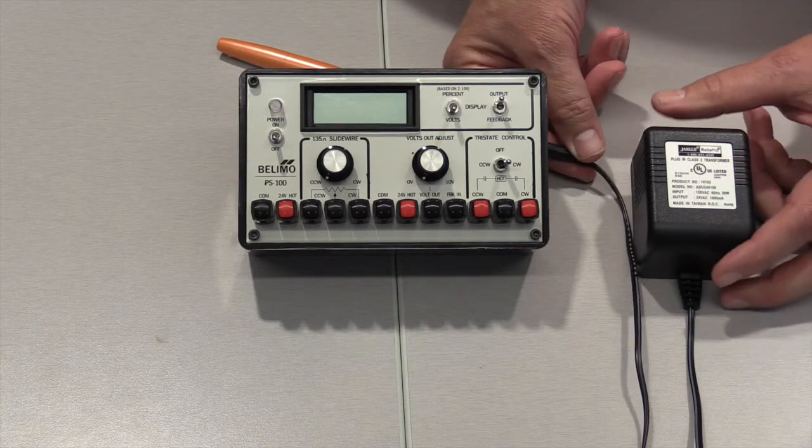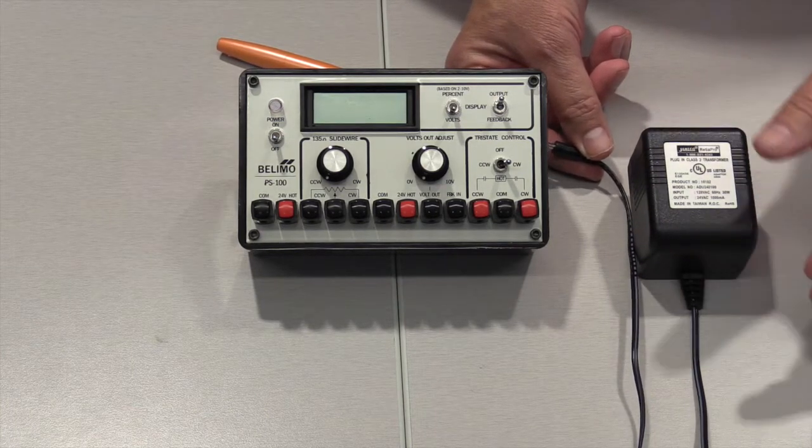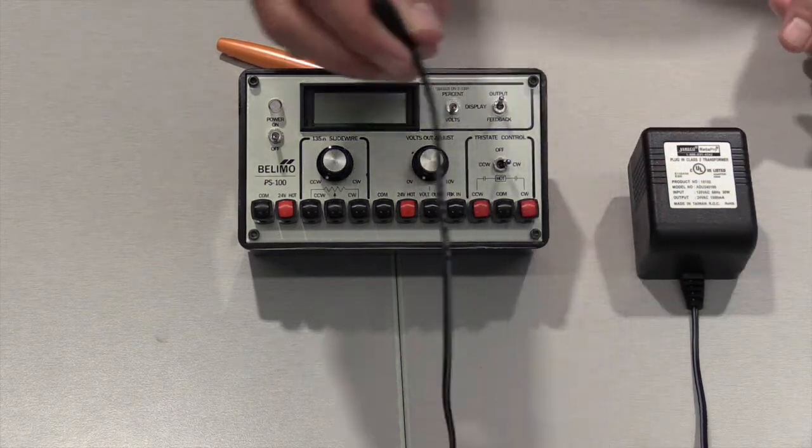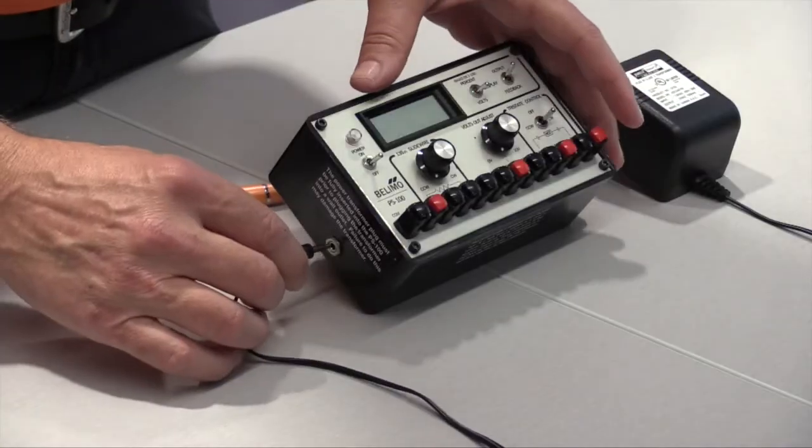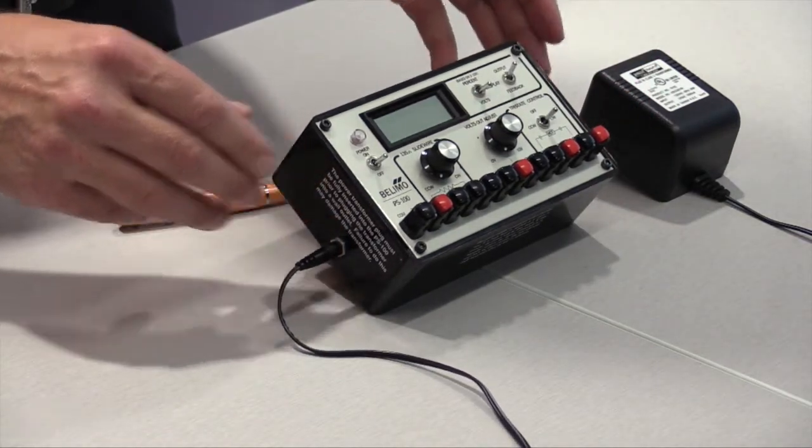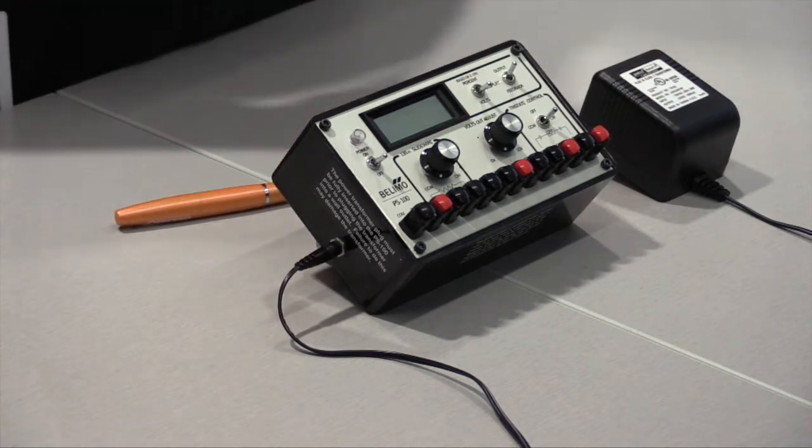This is a 110 volt AC transformer that will convert the signal to 24 volts AC. I have this little plug here. I'm going to plug it into the side before I put it into the 110 volts. It's just a good practice to do that so we don't cause any damage to the PS100 or the transformer.